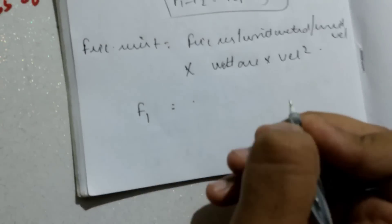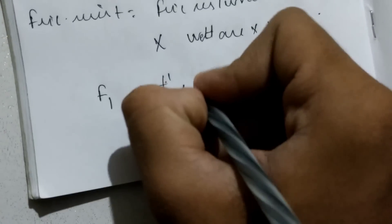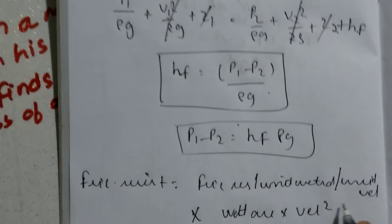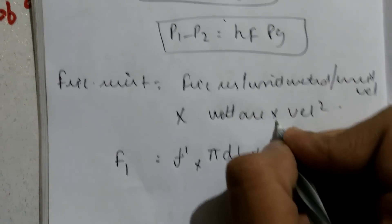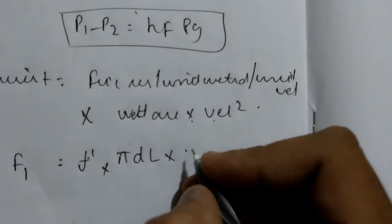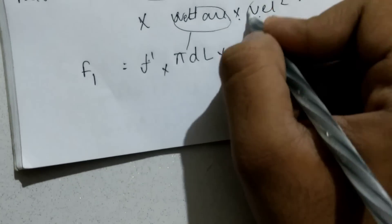So frictional resistance F1 equals F prime (frictional resistance per unit wetted area per unit velocity) multiplied by the wetted area π·D·L and by V squared. The velocity V is constant since V1 = V2 = V for a uniform pipe.